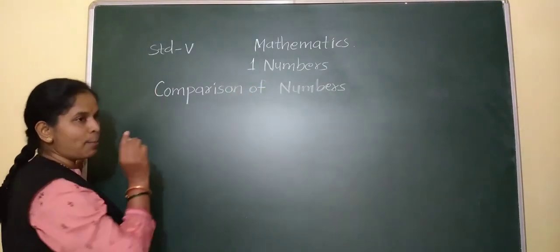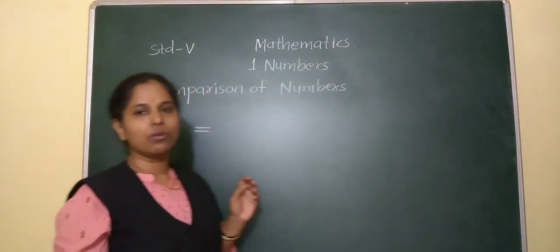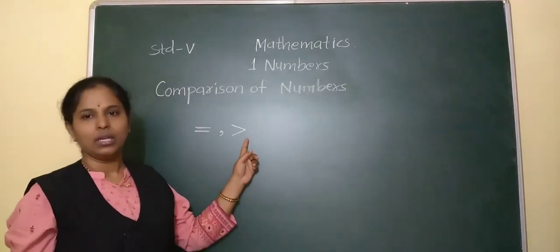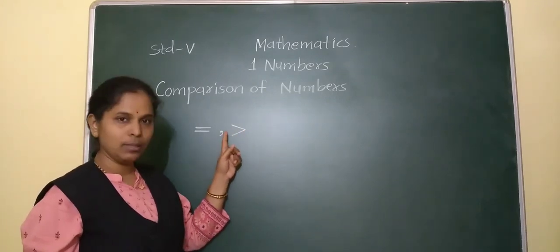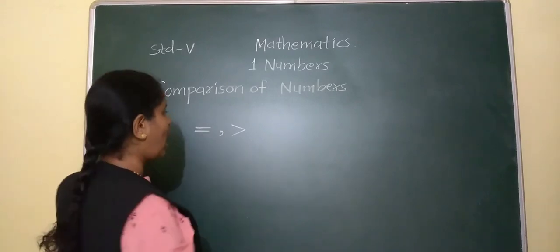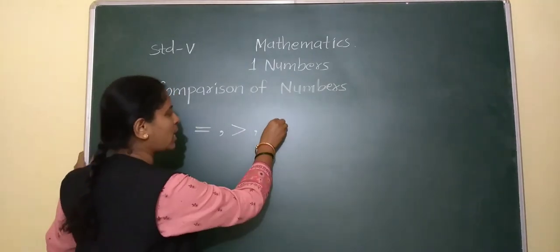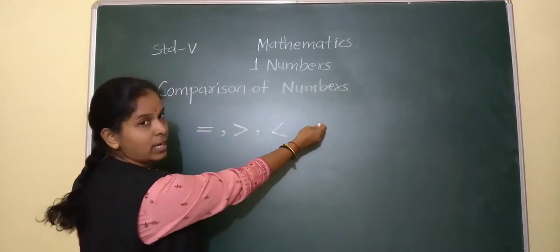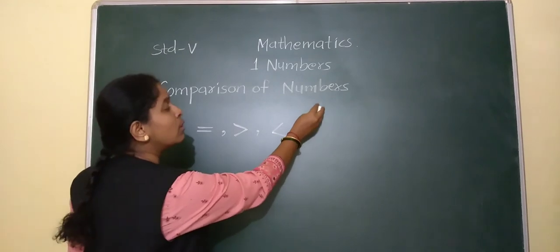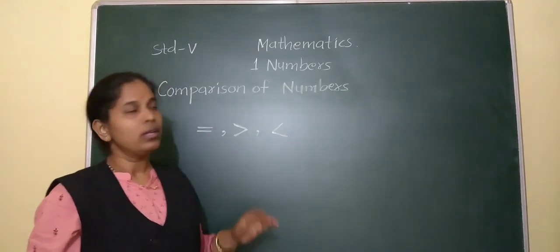For comparison of numbers, we use 3 signs. The first one is 'is equal to'. The second sign means the left side number is greater than the right side number. The third sign — look at the mouth face of this sign — means the right side number is greater than the left side number. These 3 signs we use for comparison of numbers.